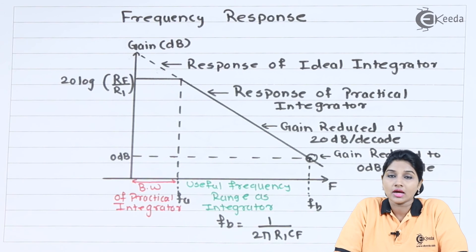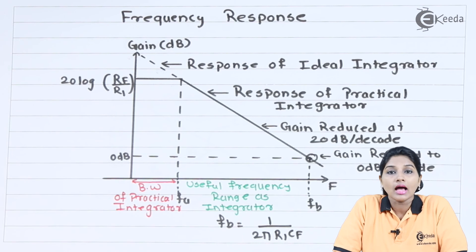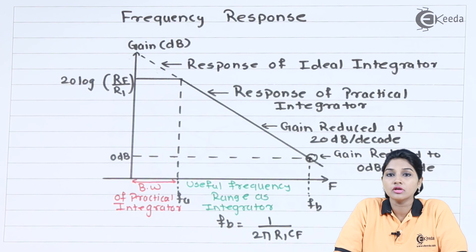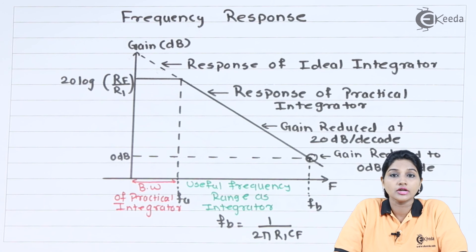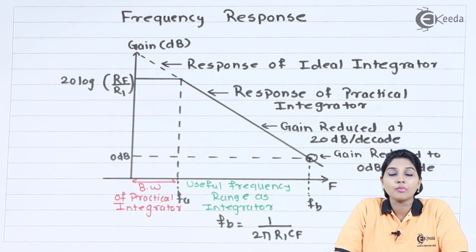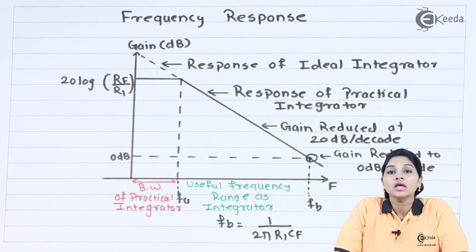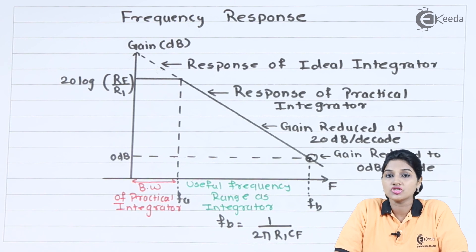Now let's see the applications of the active integrator. The active integrator circuit can be used to produce triangular or ramp waveforms — since when a square wave input is applied, the output is a ramp or triangular waveform, it can be used as a triangular wave generator or ramp wave generator. It can also be used in an analog to digital (A to D) converter. Additionally, it can obtain a signal which is the integration of the input signal applied to the op-amp, and it also plays an important role in communication circuits.